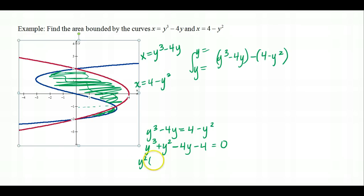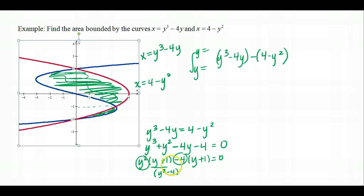Solving (y² − 4)(y + 1) = 0 gives y = 2, y = −2, and y = −1. These are the y-values of the three points of intersection, confirmed by the graph. So y = −2, −1, and 2 are the limits of integration we need.